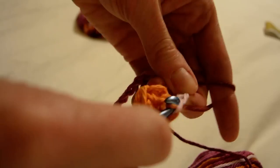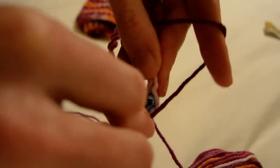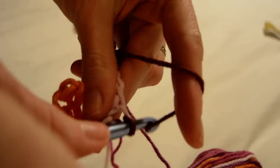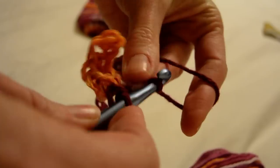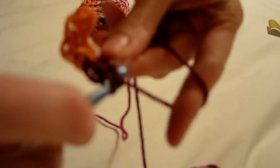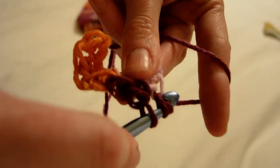This is what you're going to do for this entire pattern. I'm going to go to the end and I'll show you how to turn. Then you just continue with the single crochet until it's as big as you like it.